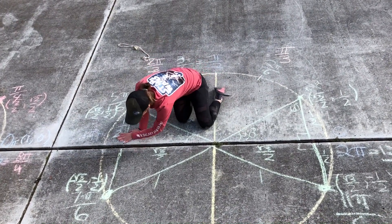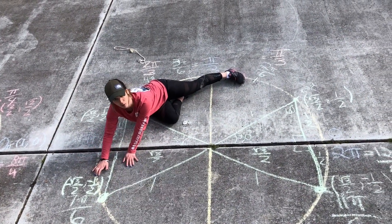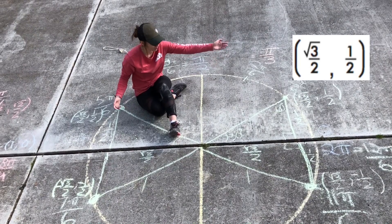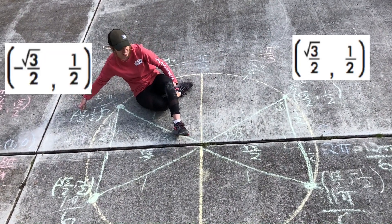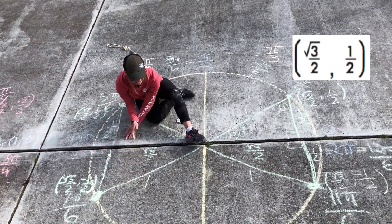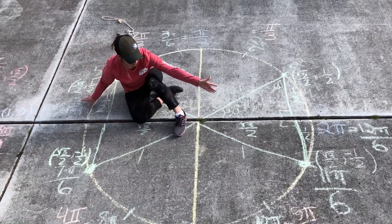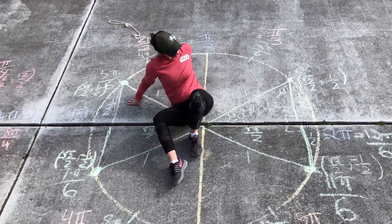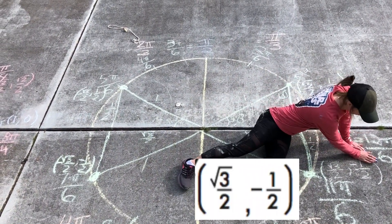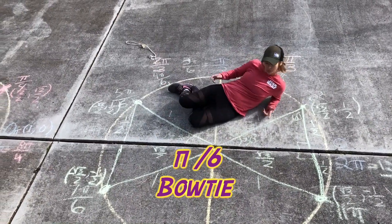Jumping down to 7 pi over 6, we're in the third quadrant: the coordinate is (-root 3 over 2, -1 half). Notice that the side lengths stay consistent — it's just whether the coordinates are positive or negative based on the quadrant. Then the last coordinate at 11 pi over 6 in the fourth quadrant: positive x, negative y — so (root 3 over 2, -1 half). That's the pi-over-6 bow tie.